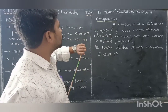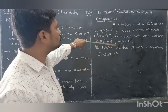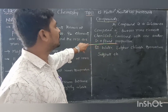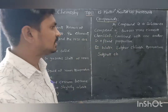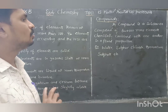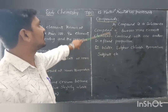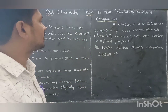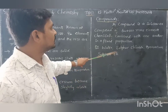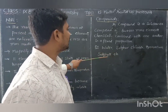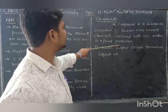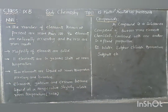The second pure substance is compounds. A compound is a substance composed of two or more elements chemically combined with one another in a fixed proportion. When we add two or more elements chemically in a specified proportion, the result is called a compound. For example, water is a combination of hydrogen and oxygen. Similarly, sodium chloride and ammonium sulfate are examples of compounds.